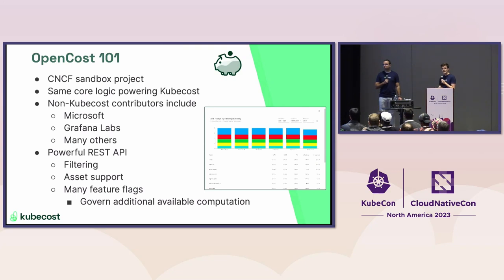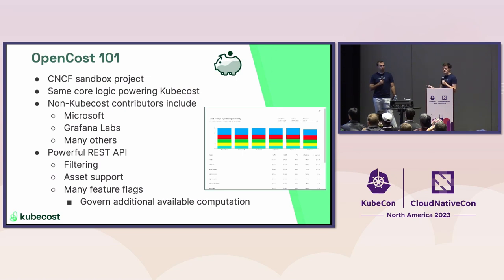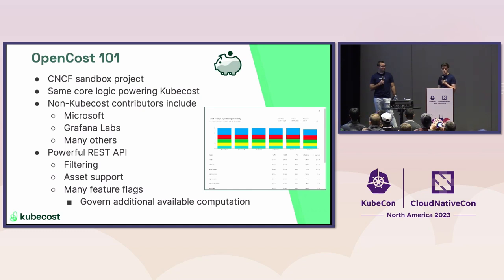OpenCost is a CNCF sandbox project. The primary maintainer is our company, KubeCost, but we have many other excellent contributors including Microsoft, Grafana Labs, and many others. What we want to highlight today is the REST API. It does come with a built-in UI, but for the demo we're going to look at the REST API and how it combines information from kubectl describe with actual cost information about your nodes. There's much more you can do with OpenCost, but we only have time for a small slice of it.